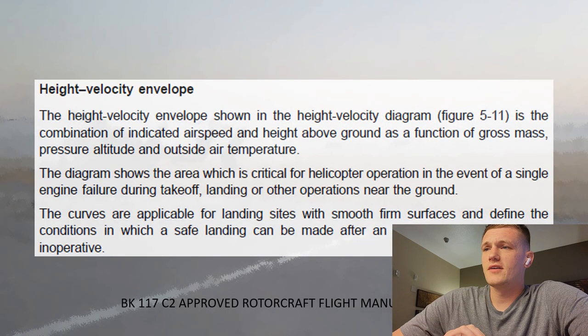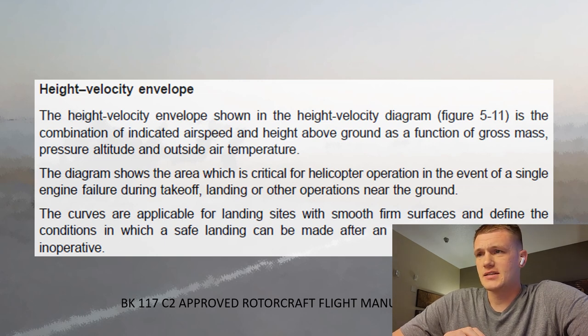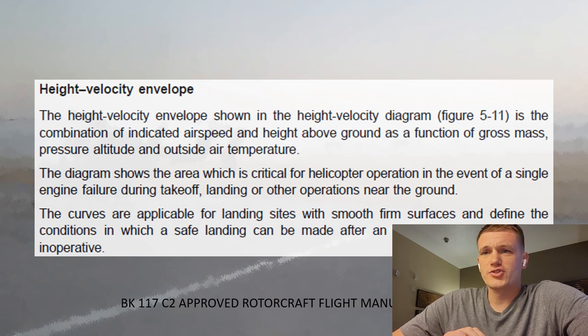The Height Velocity Envelope, shown in the Height Velocity Diagram, Figure 5-11, is the combination of indicated airspeed and height above the ground as a function of gross mass, pressure altitude, and outside air temperature. You calculate this using Task 1010.